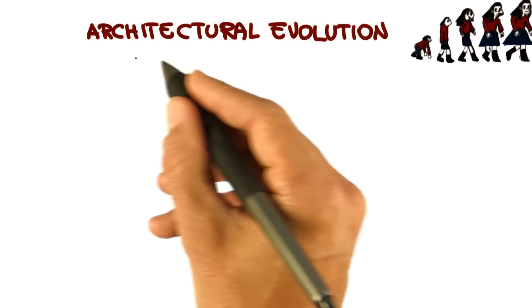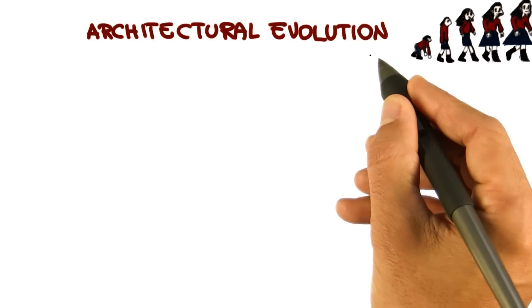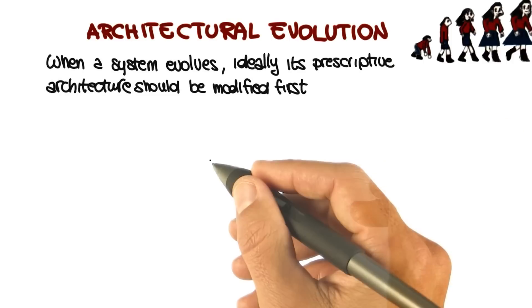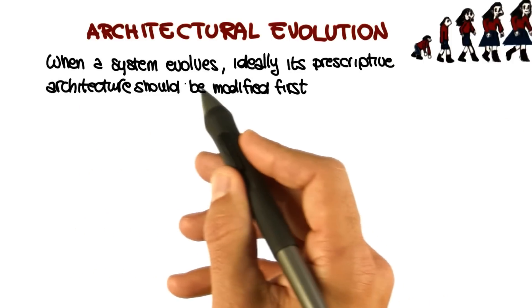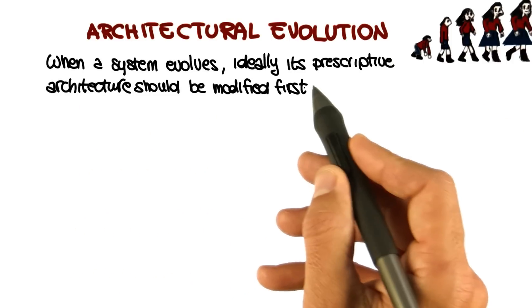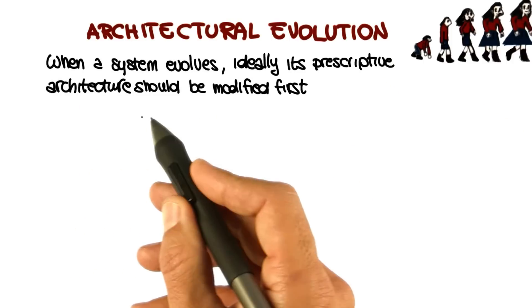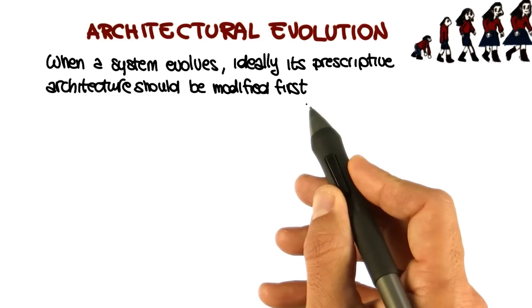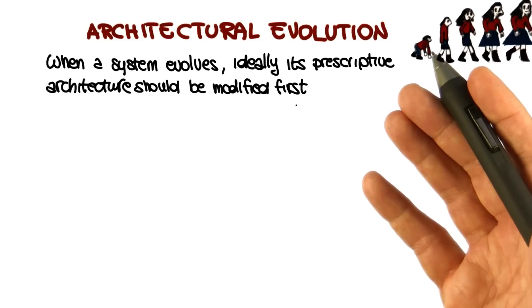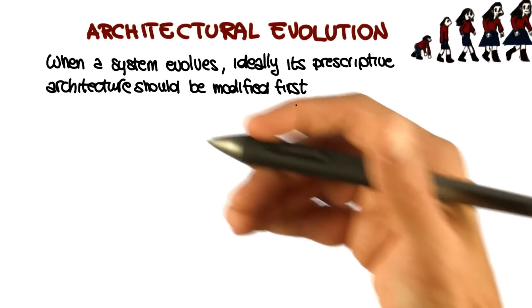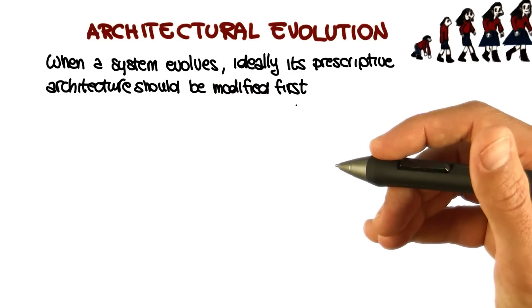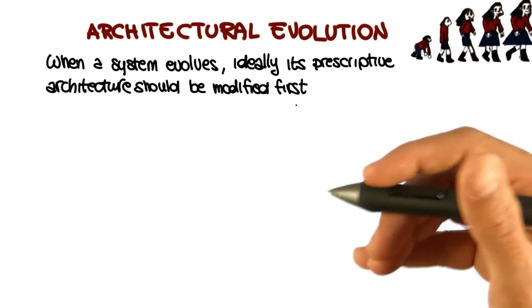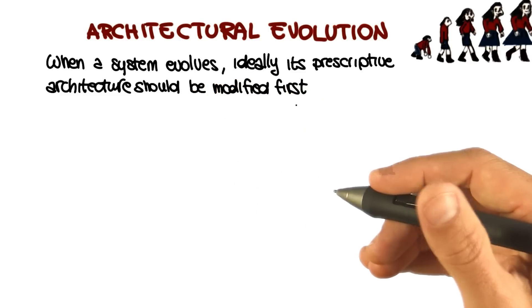To do that, let's look at how architectural evolution occurs in practice. Ideally, when a system evolves, its prescriptive architecture should be modified first — just like when you modify a building, you change the blueprint first, and then you change the actual building. You don't go the other way around.